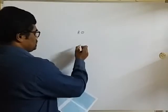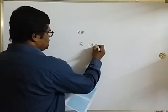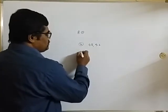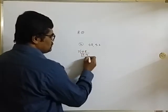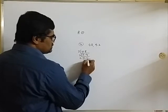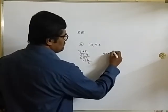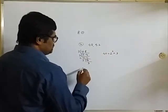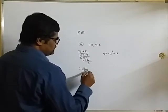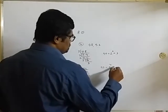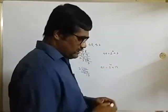Let us move on to another problem. Question B: 48 and 52. Let us break these into prime factors. 48 = 2 to the power 4 into 3. For 52: dividing gives 26, then 13. So 52 = 2 squared into 13. This is a different problem since 48 and 52 have different prime factors.